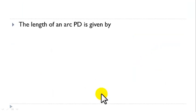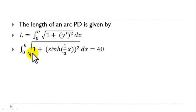Now, we know that the length of an arc PD is given by the formula L equal to integral from 0 to b of root 1 plus y prime squared with respect to x. Substituting for y prime, we obtain integral from 0 to b of root 1 plus sinh squared of x over a with respect to x. And we recall the length of that arc from P to D is equal to 40 meters.